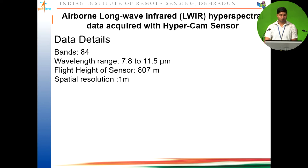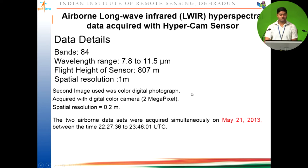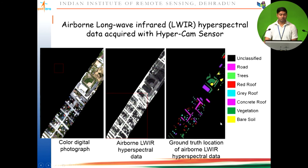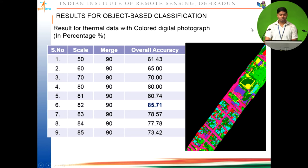Airborne long wave infrared hyperspectral data was acquired with a camera containing 84 spectral bands ranging from 7.8 to 11.5 micrometers at 1-meter spatial resolution, alongside a color digital photograph at 0.2-meter resolution. Both airborne datasets were acquired simultaneously on May 21st, 2013. Classifying with long wave infrared alone gave a lot of salt-and-pepper noise, but integrating it with the color digital photograph improved classification. Using image segmentation at scale 82 gave an overall accuracy of 85.71%.